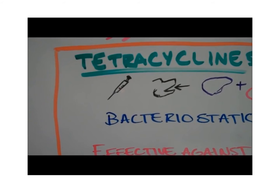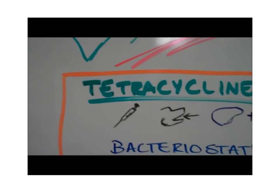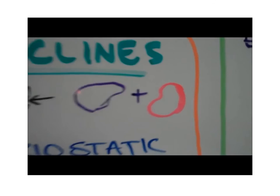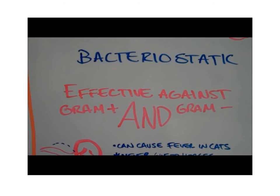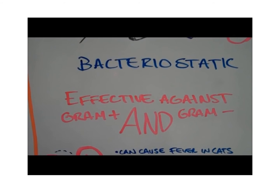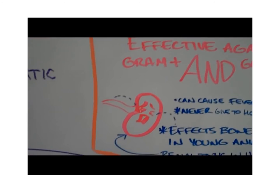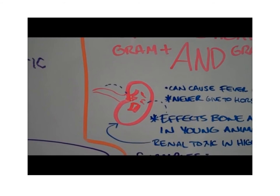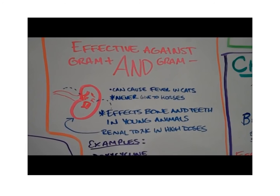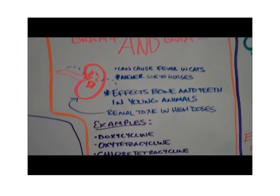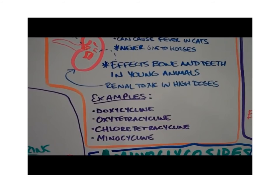Tetracyclines can be given by injection or orally, metabolized by the liver, excreted through the kidneys. They're bacteriostatic — stopping bacterial reproduction. Effective against gram-positive and gram-negative bacteria. They're distributed quickly through tissue and sometimes penetrate the central nervous system. Concerns include renal toxicity at high doses, fever in cats, and effects on bone and teeth in young animals. Never give to horses.